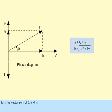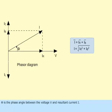I sub B is the vector sum of I sub L and I sub C. I is the resultant current. Phi is the phase angle between the voltage, V, and resultant current, I.